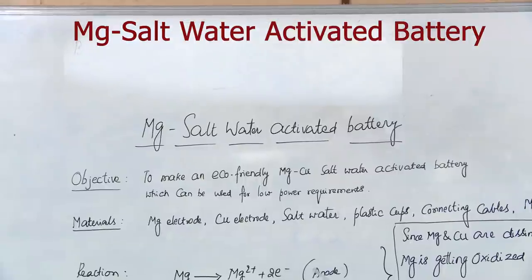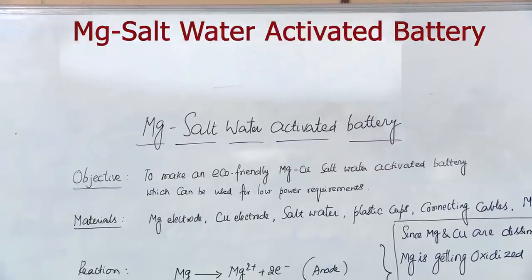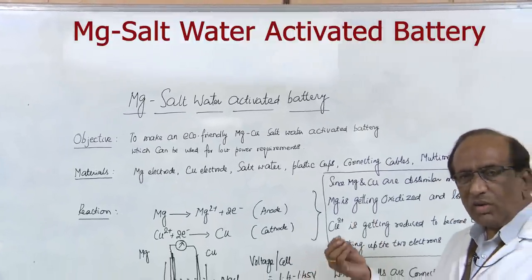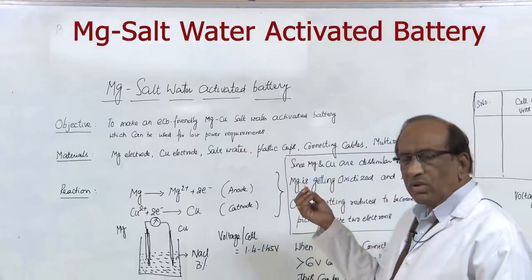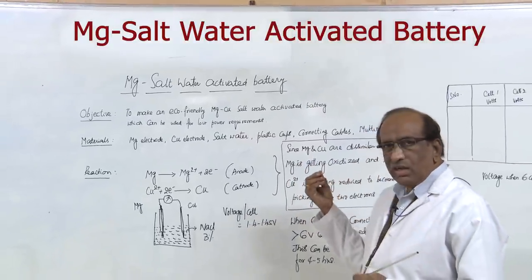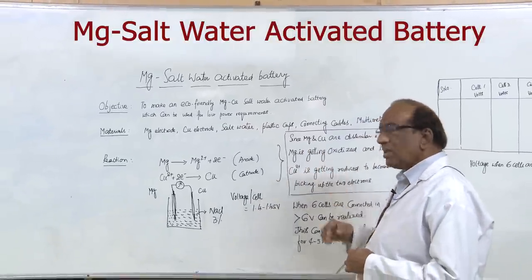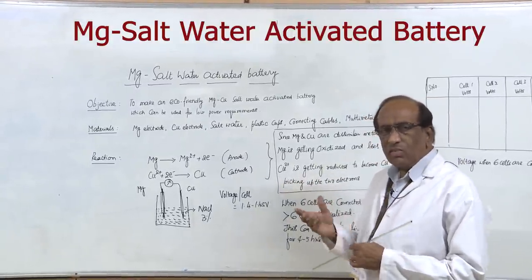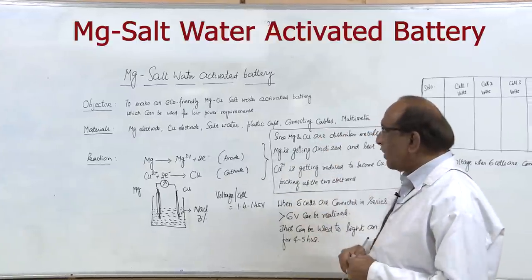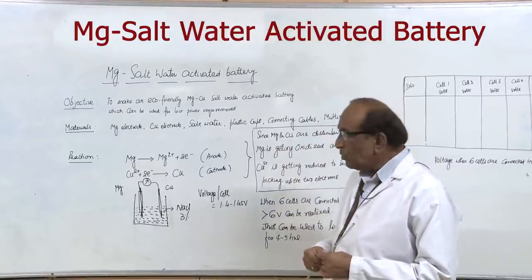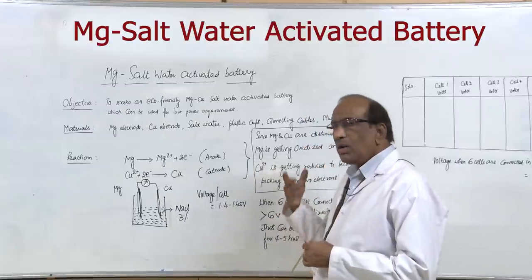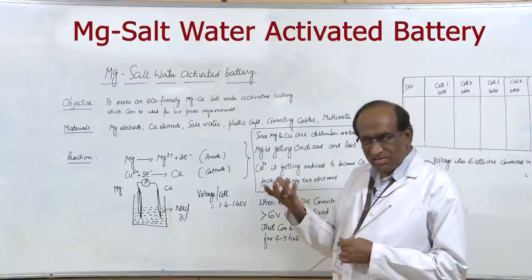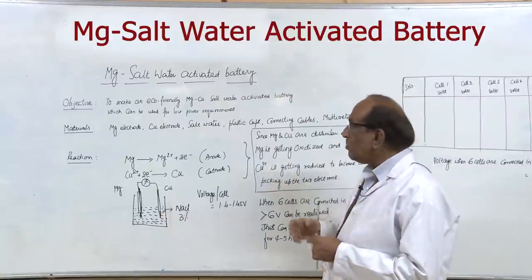The objective of this experiment is to make an eco-friendly magnesium salt water activated battery with magnesium being the anode material and you can use copper, graphite or any other more electropositive element as the cathodic element and salt water of a particular concentration, approximately 3 to 4 percent concentration of salt water is used for activating this battery. The idea is when you go to a place where you have a seashore and you do not have any other electrical appliance available with you for lighting or something.